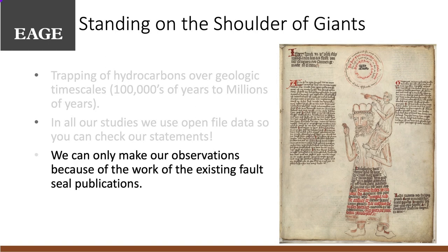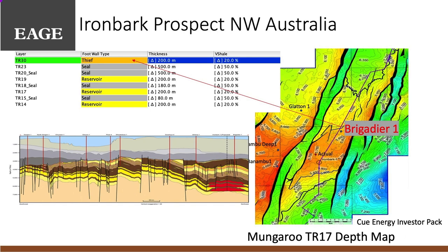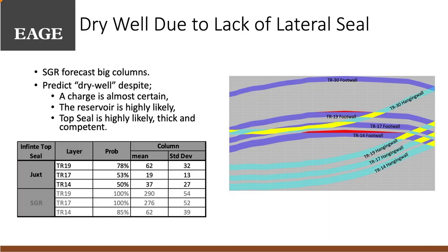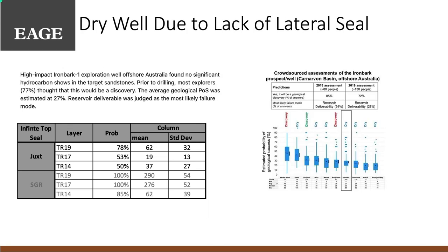It's interesting because we're at the cusp of science and industry. Here's the IronBark prospect that was drilled in 2020. A good data set was available through the InvestorPack that QEnergy put out. We put that together pre-drill and predicted a dry trap based on juxtaposition. A data elicitation study with around 200 participants came up with a 77% chance that it would have hydrocarbons, but the problem would be deliverability. Everyone should have been able to do those Allan maps and see the juxtaposition problem — this is where science diverges.